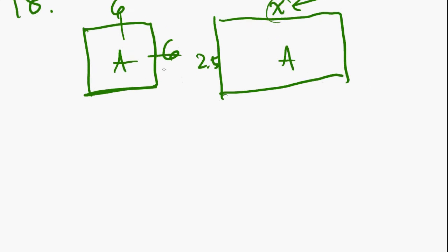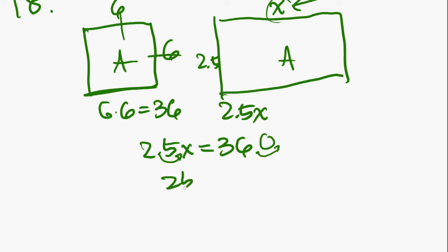Alright. As we know, area is length times width. So the area of the square is going to be 6 times 6. That's 36. And the length of the rectangle is going to be 2.5 times x. And these two are equal to each other. So 2.5x equals 36. What you can do here is move the decimal over one spot. Move the decimal over one spot. And you have 25x equals 360. And x, that comes out to, let's see here, 14.4. Yes, 14.4. And that is answer E.